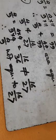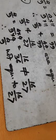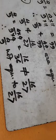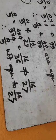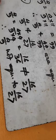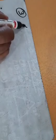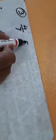Question number three: write three rational numbers equivalent to each of the following. For four by seven, we find equivalent rational numbers. Four by seven into two by two gives eight by fourteen.